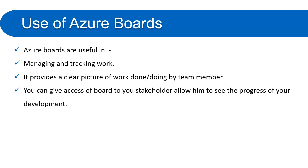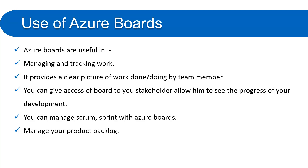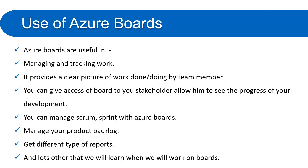You can give access to your stakeholder to allow them to see the progress of development. If your stakeholder wants to see the progress of the sprint, you can add them to your project and they can view it in Azure Boards. You can manage Scrum sprints with Azure Boards, manage your product backlog, and get different types of reports. Azure Board is very important for generating multiple types of reports, and there are lots of other things we will learn when we work on the boards in this tutorial.